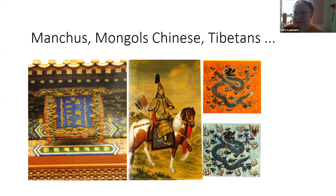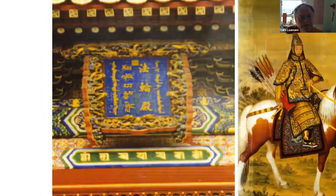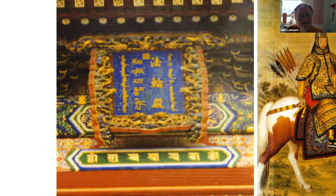Here you can see, first in Mongolian, then in Manchu, here on the right-hand side in Tibetan script, and in Chinese. This is from the Yonghegong, the Lama temple, which is built by the Yongzheng Emperor in Beijing.